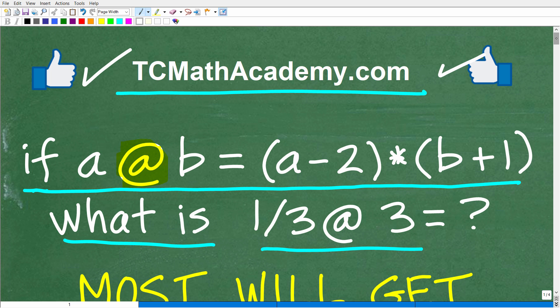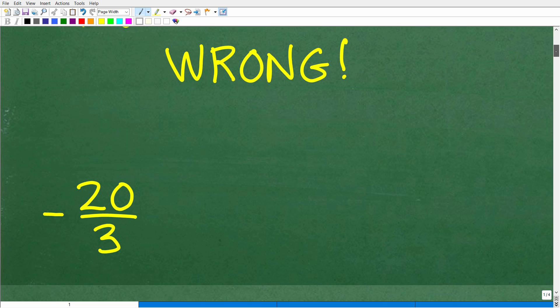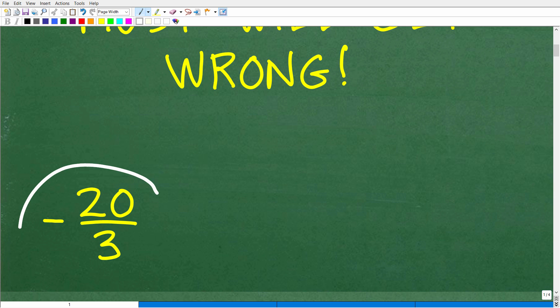Okay, so let's go ahead and see what the answer is to this crazy looking problem. And obviously, this is not a symbol that we're used to in mathematics. But what is the answer to this problem? Well, here it is: negative 20 over 3.